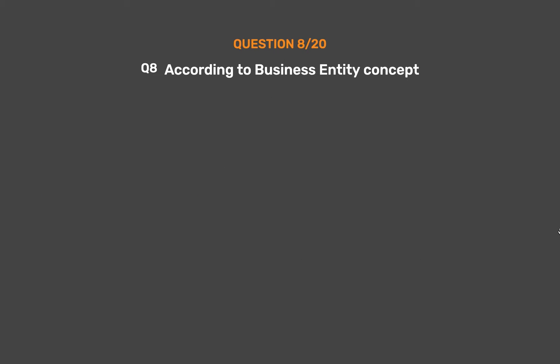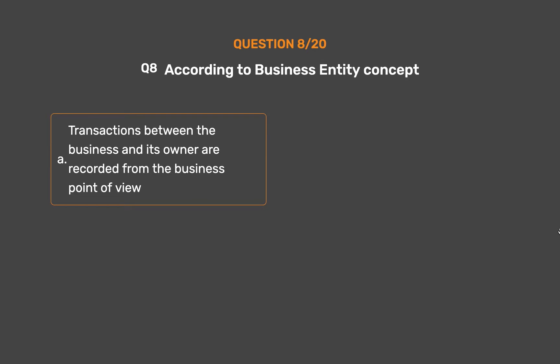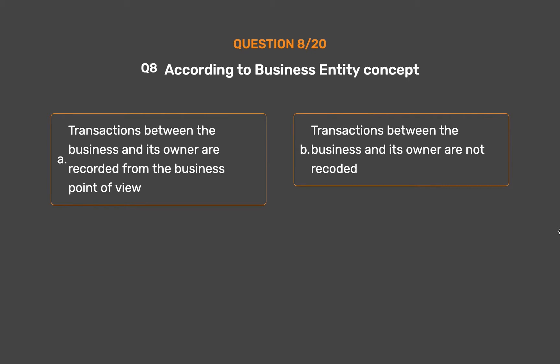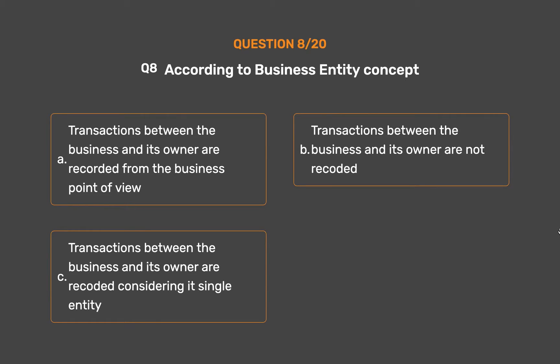Question No. 8: According to the Business Entity Concept, which statement is correct? Option A: Transactions between the business and its owner are recorded from the business point of view. Option B: Transactions between the business and its owner are not recorded. Option C: Transactions between the business and its owner are recorded considering them as a single entity. Option D: None of these.